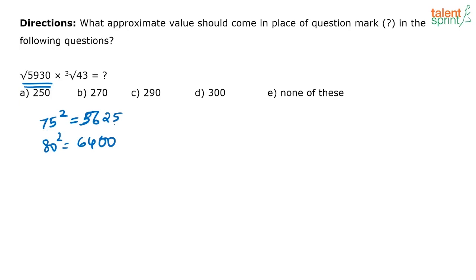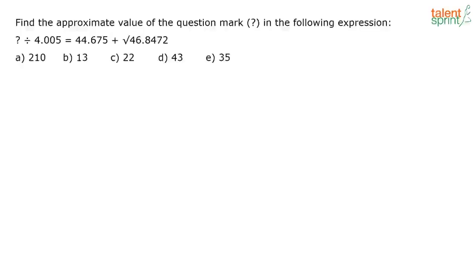Now I know that root of 5930 is going to lie between these two. If you actually see, 77 squared is going to be 5929. Here you have 5930, so you can approximate it and take it as 77. Similarly, when you look at cube root of 43, you have 3 cube is 27, 4 cube is 64. So this 43 is coming in between these two, so you can approximate it and take it as 3.5 because it is almost in between 27 and 64. So 77 into 3.5, when you solve it, you will get it as close to 270. So option B.